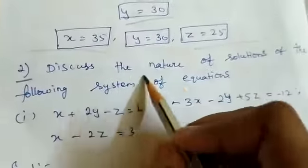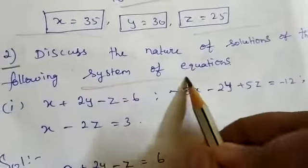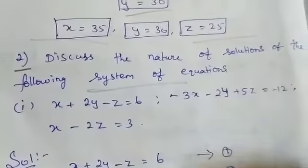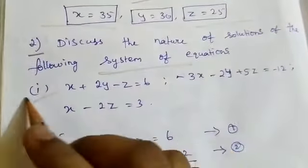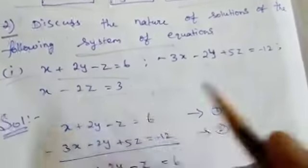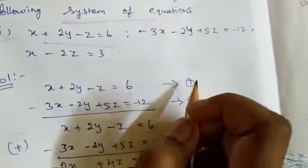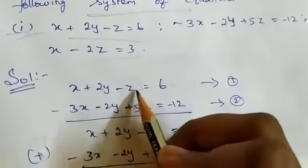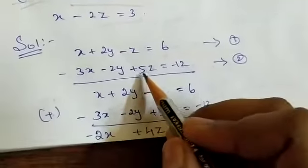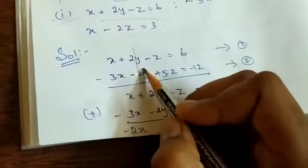Our second question is: discuss the nature of the solutions of the following system of equations. We are going to determine if the system has infinite solutions, is inconsistent, or is consistent. The first part has 3 equations given. We add equation 1 and 2: x plus 2y minus z equal to 6, and minus 3x minus 2y plus 5z equal to minus 12.